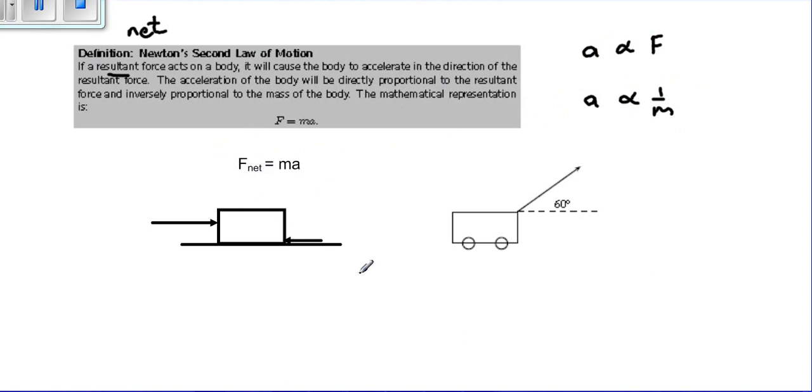Now to look at an example. Say we have an object of mass 3 kilograms, and we apply a force of 50 newtons onto this object. There's a frictional force of 10 newtons, and 50 minus 10 gives us 40 newtons as our net force.